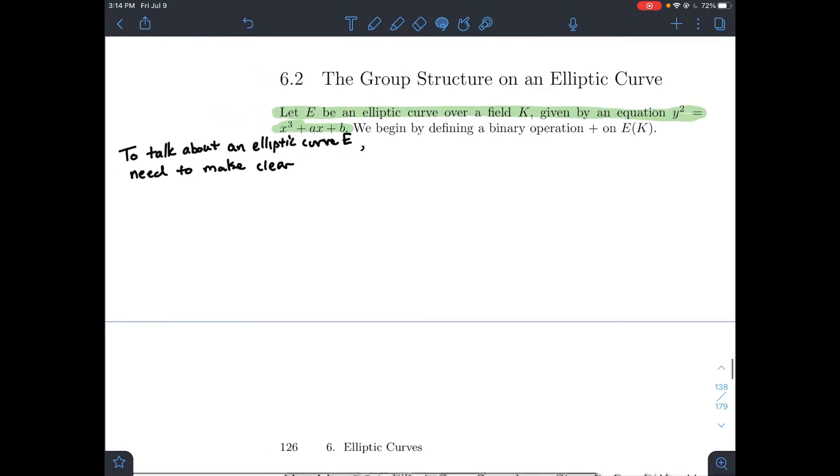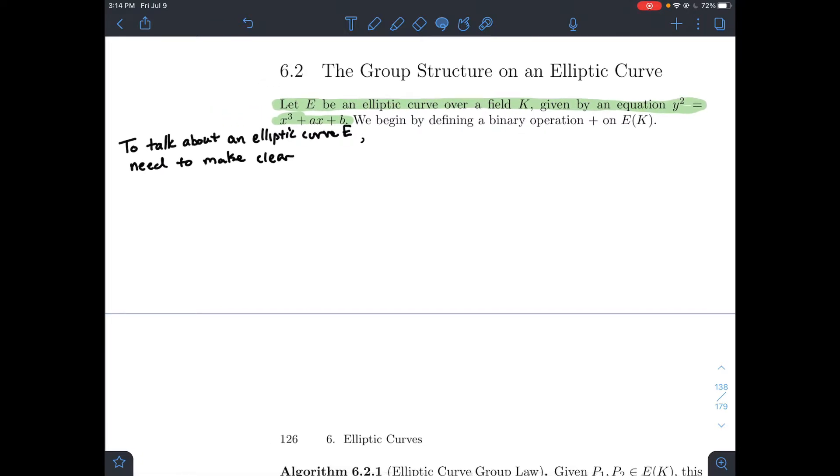Just to remind you of a few things here, to talk about an elliptic curve E, you need to make clear a couple things. The first thing you need to make clear is what is its equation. You need to tell them y squared equals x cubed plus ax plus b. It's really the only things that change from curve to curve are what a and b are. And the other thing is over what field are you considering this curve? So where do a and b come from? Are they allowed to be any rational number? Do they live in Z mod 5Z? And then what that also tells me is what are the points x comma y that you're considering as being on the graph, being solutions to this equation. And so those come from K as well.